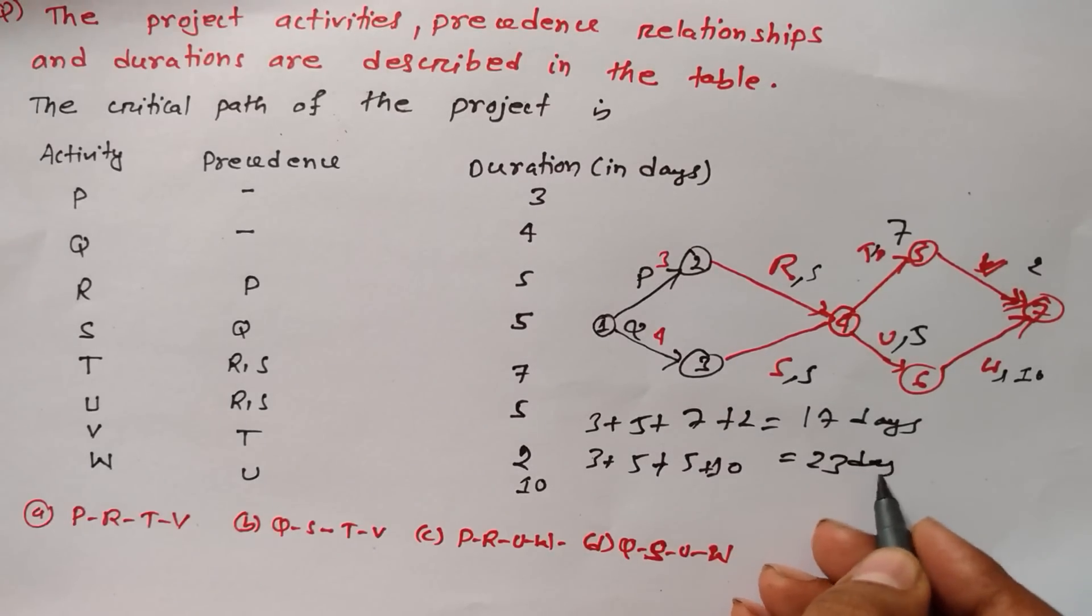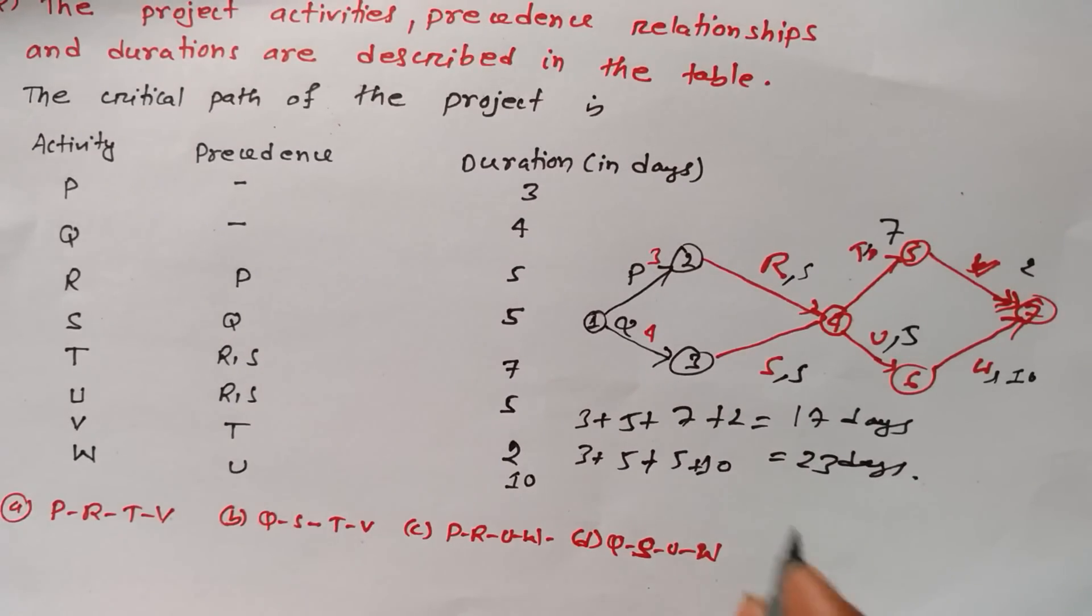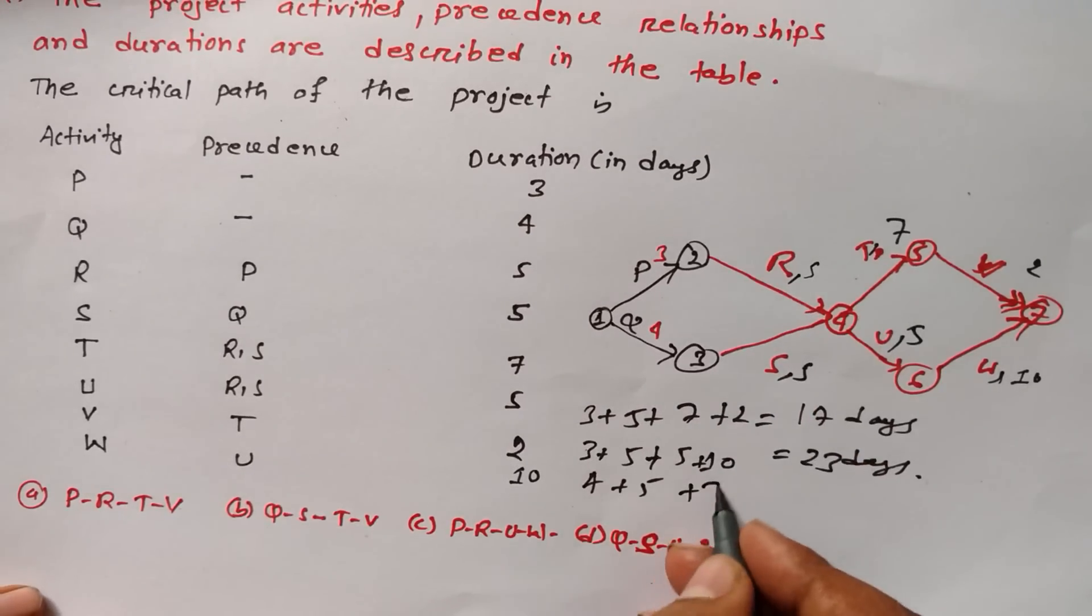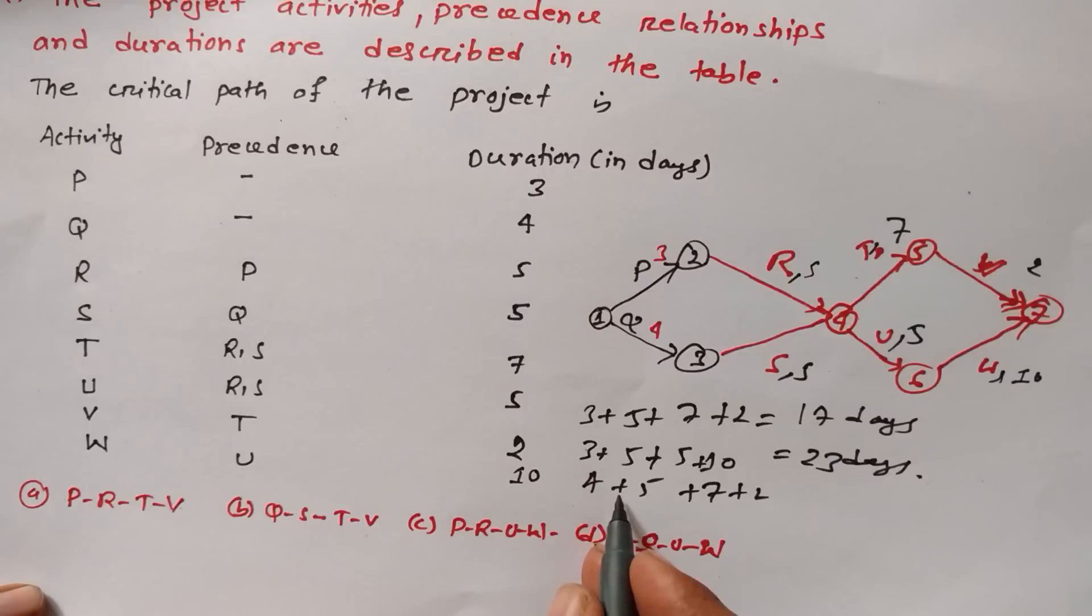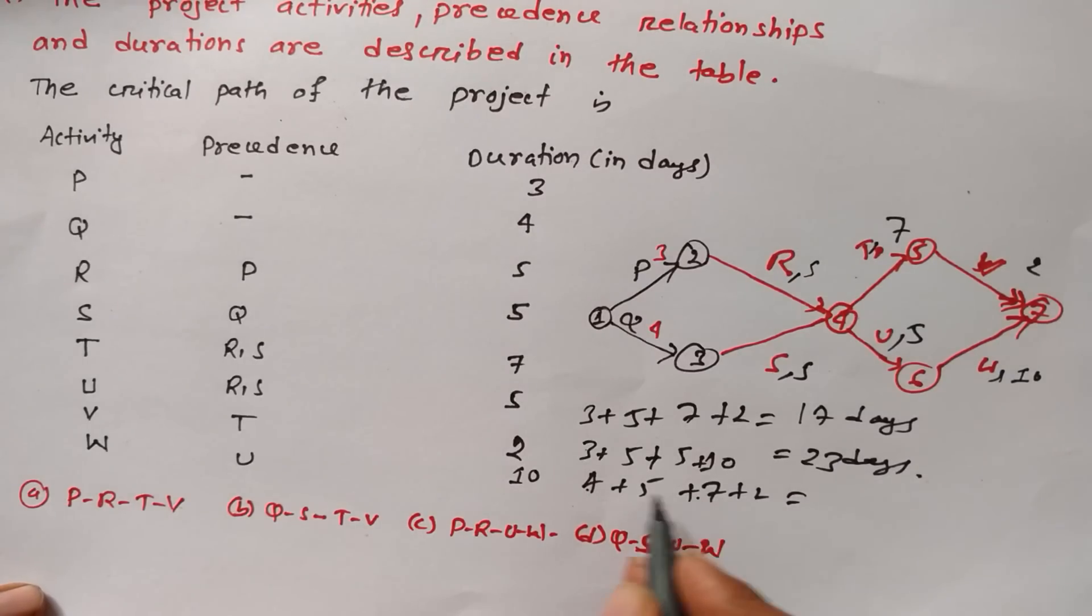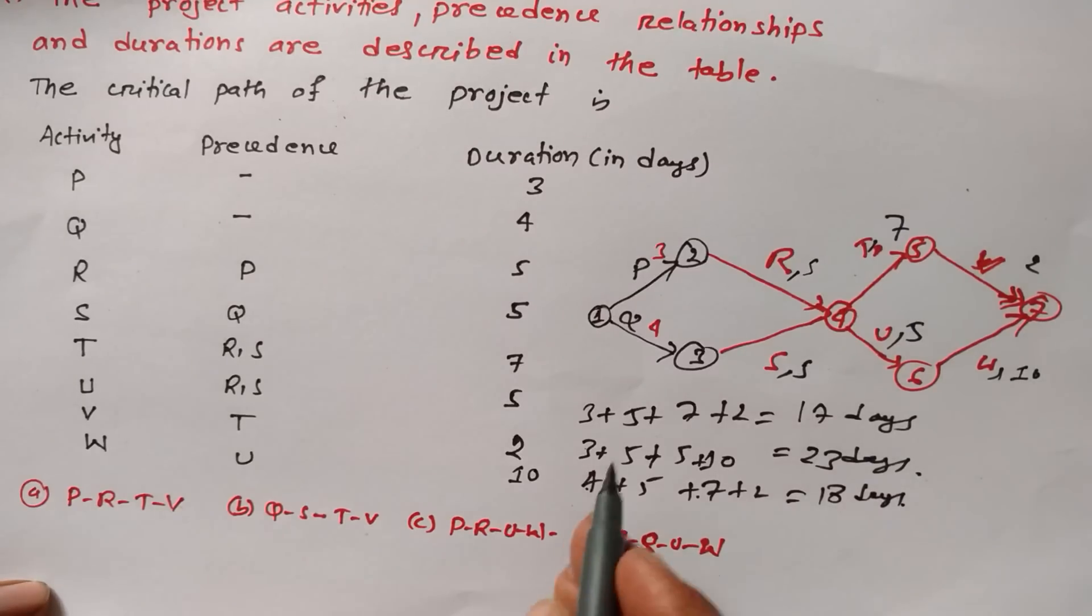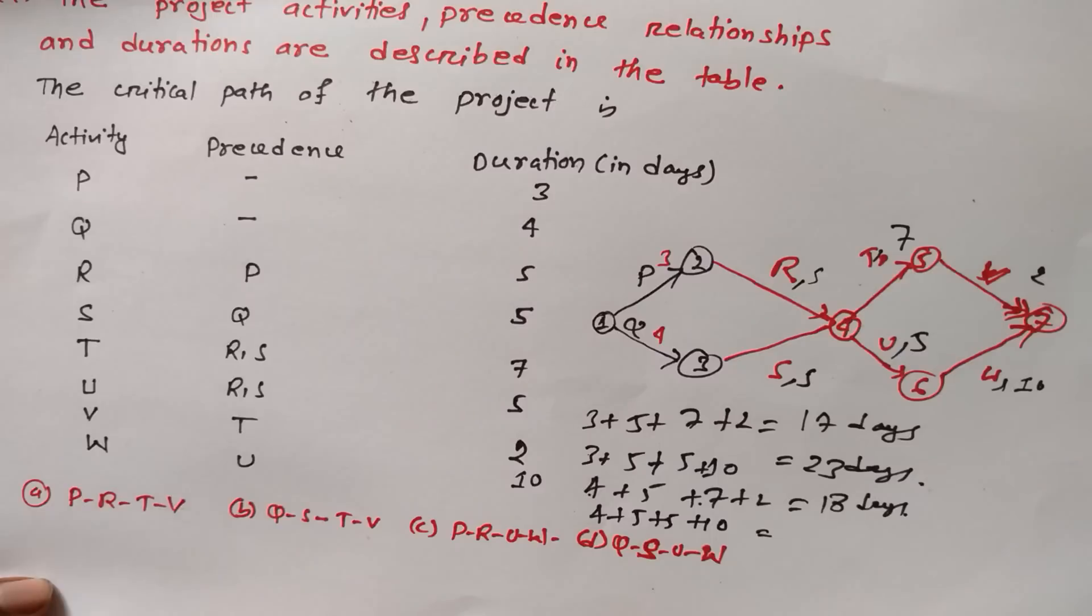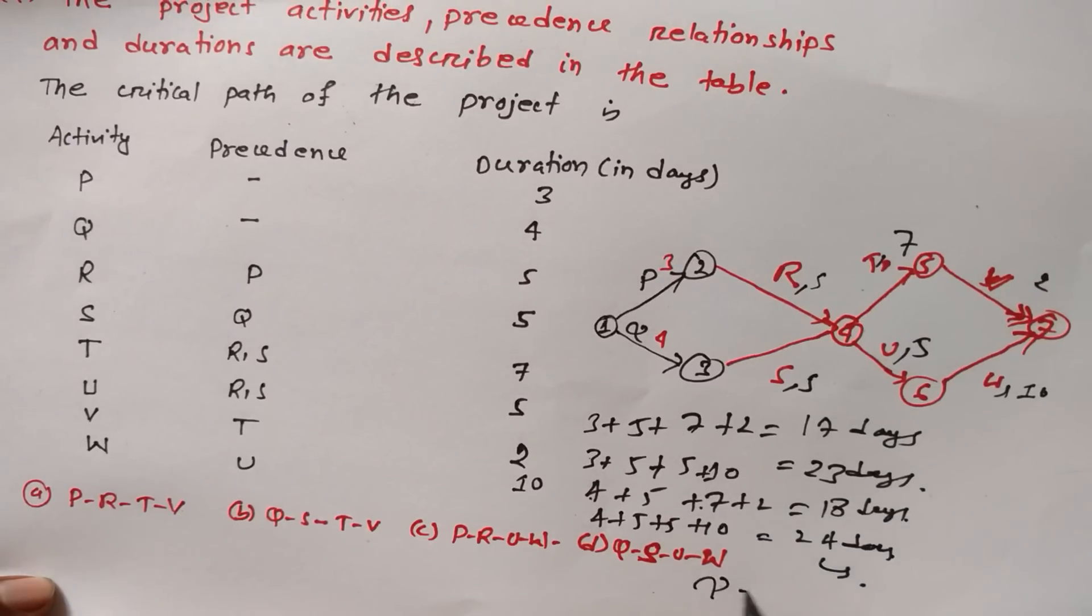Now let's go to another path, that is 4 plus 5 plus 7 plus 2, so 12, 9, 16 and 2, 18 days. Another path is here: 4 plus 5 plus 5 plus 10 equals 24 days.